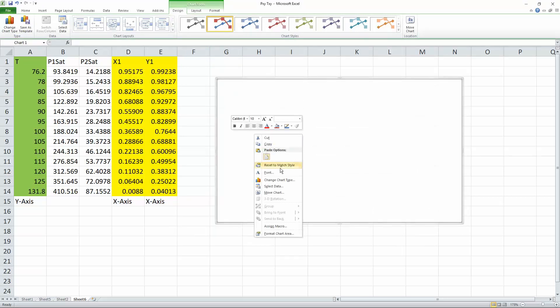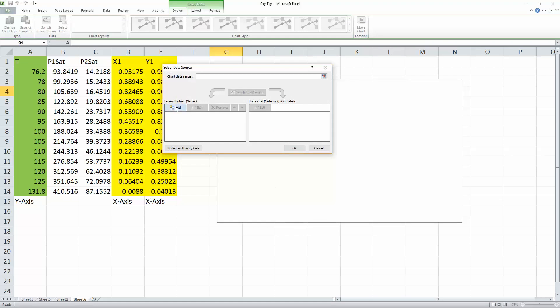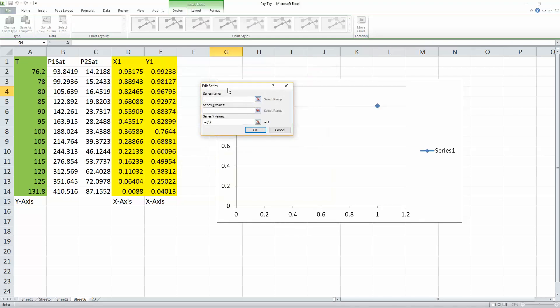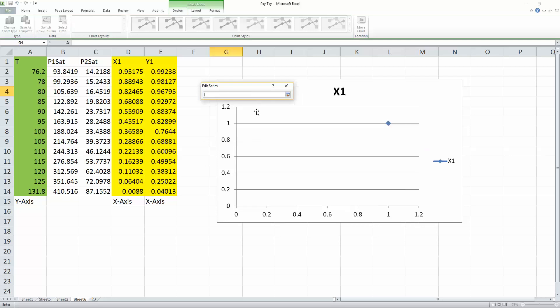Then we right click, we go down to select data, we hit add, and we have series name. First, we will do x1. We select this icon right here. And then we drag all the way for x1. Then we hit enter.